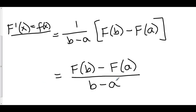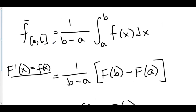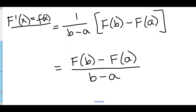Now what is this? This is the slope. And of course, we can also interpret this as the average rate of change of big F from a to b. So while we have the average function value of small f, we also have the average rate of change of big F.